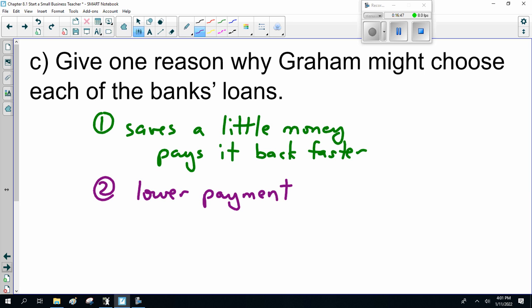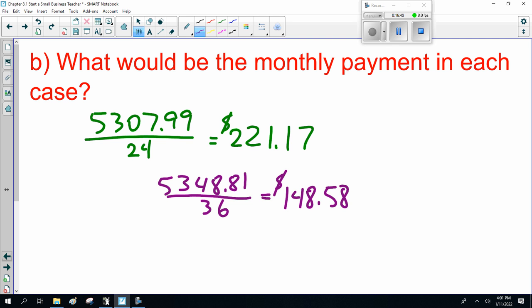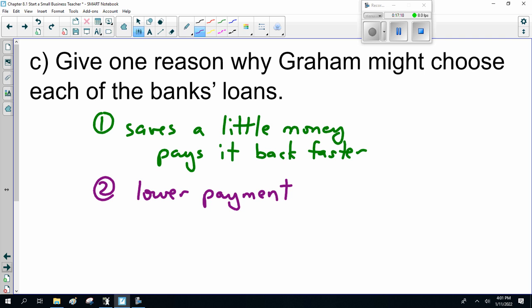Now the other bank, the second bank where he pays more and it takes him longer, he has a much lower payment. For some people, $221 a month is a lot of money. If that's the case, then only paying $148 is a lot easier. If you haven't got a lot of money, the second option is better. It's a much lower payment. Now I'm going to pause recording here because it's getting ridiculously long. This is the interest stuff you're supposed to know. Any questions, shoot me an email. Otherwise, good luck, guys.